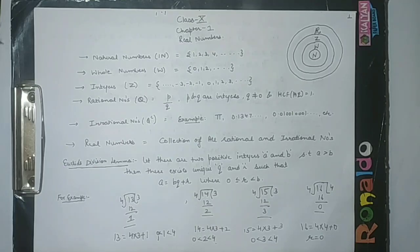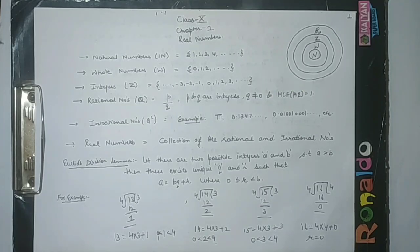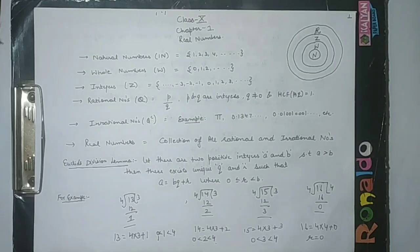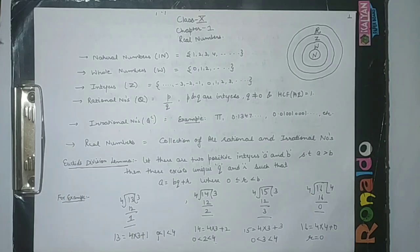The first collection of numbers is natural numbers, that starts from 1 and goes to infinity. Next, if we include 0 in the natural numbers, then this collection is called the whole numbers. Next are integers. Integers include all the negative numbers along with the whole numbers. Next are rational numbers. Rational numbers are those numbers which can be written in the form of p by q, where p and q are integers, q not equal to 0, and HCF of p and q is 1 — that means p and q are co-prime.